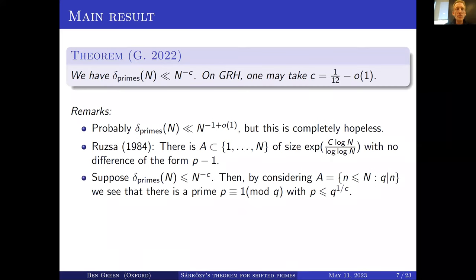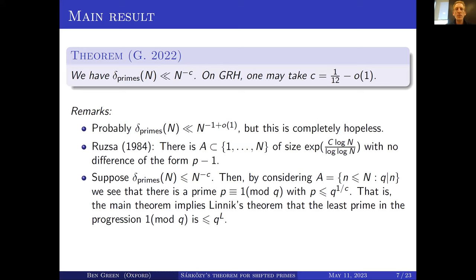Another remark: suppose you want to prove the theorem I stated. Just by considering the set of all a < n divisible by some number q, you can convince yourself that the fact that set A contains two elements differing by a prime minus 1 implies there is a prime congruent to 1 mod q of size at most q^{1/c}. That's basically Linnik's theorem. So the theorem I stated implies Linnik's theorem that the least prime in the progression 1 mod q is at most q^L for some fixed power L.